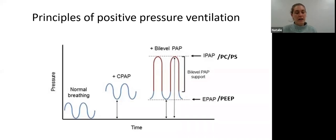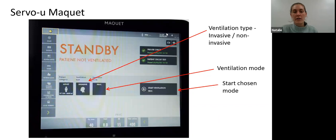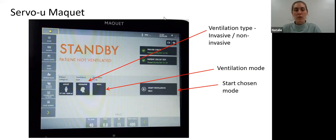Now linking ventilation in general to what we might see in practice, we're going to focus mainly on the Maquet - the ventilator we see on ICU. This is the Servo U Maquet, which most people working on ICU out of hours will be familiar with. This is the standby page. The first arrow points to the type of ventilation - we can have invasive or non-invasive. The second arrow points to the ventilation mode which we can go in and change. The button on the right starts whichever ventilation type and mode you've set.